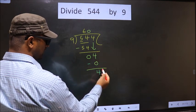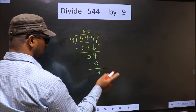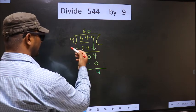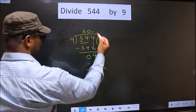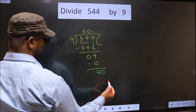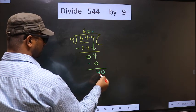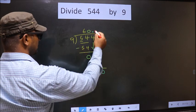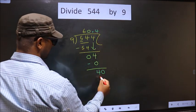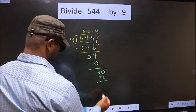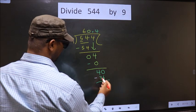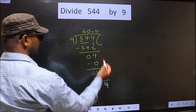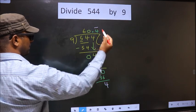Over here, we did not bring any number down, and 4 is smaller than 9. So now you put a dot and take 0 here. Now here we have 40. A number close to 40 in the 9 table is 9 times 4 is 36. Now you subtract: 40 minus 36 is 4. We got 4 again — that means we get a bar here, indicating a recurring decimal.